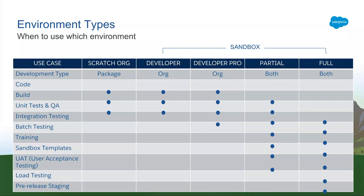This is sort of like a cheat sheet I use very often to tell customers which environment to use in which of the different use cases. Package development happens in scratch orgs. While developing changes for orgs, you're looking at developer sandboxes — this is also where you do unit testing and some QA. Then as you move on to larger testing or integration testing, that's when you start looking at larger sandboxes. Finally, when it comes to staging, UAT, and training, that's when you start looking at partial and full sandboxes. Partial and full, regardless of the development model, are used in a similar sense.